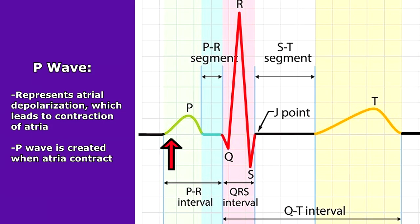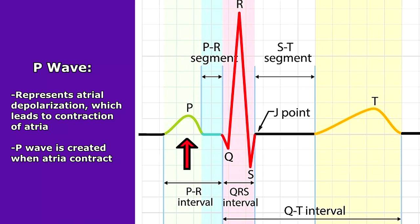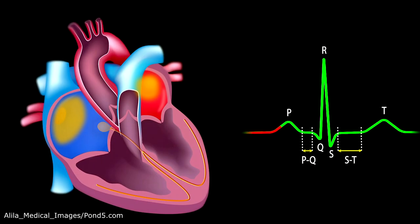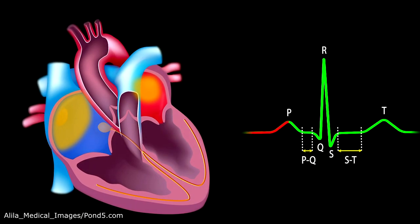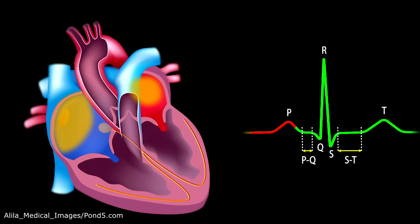The P wave represents atrial depolarization. This leads to the contraction of the atria, which is created by the SA node. Whenever those atria contract, it creates this little wave.